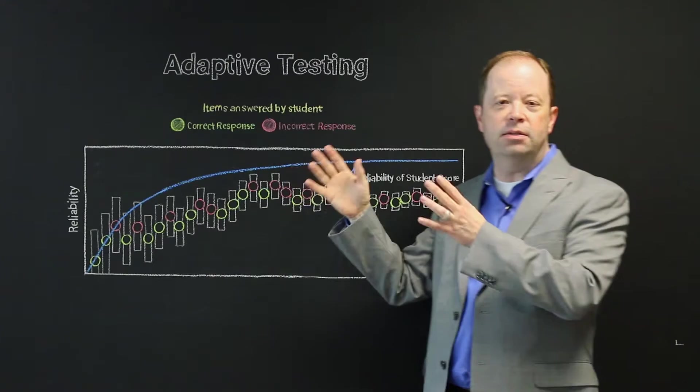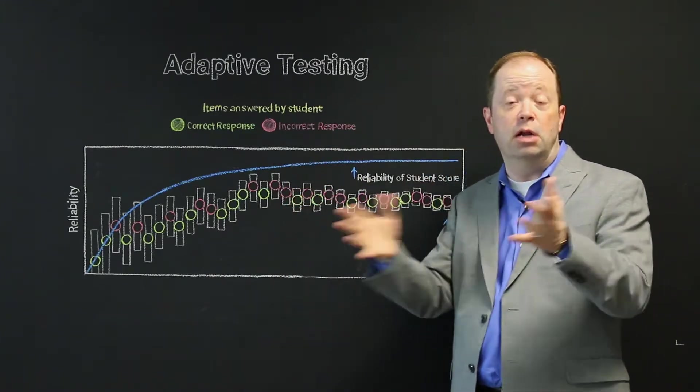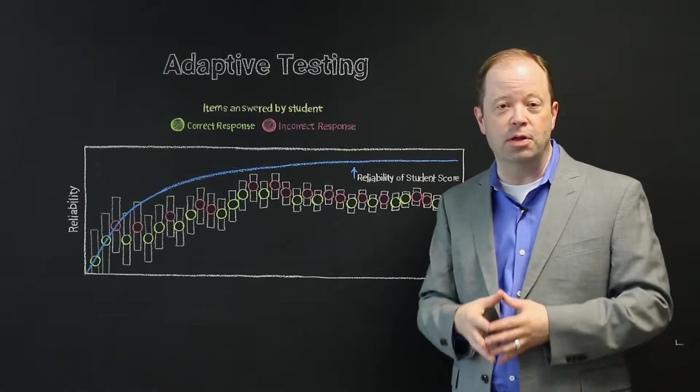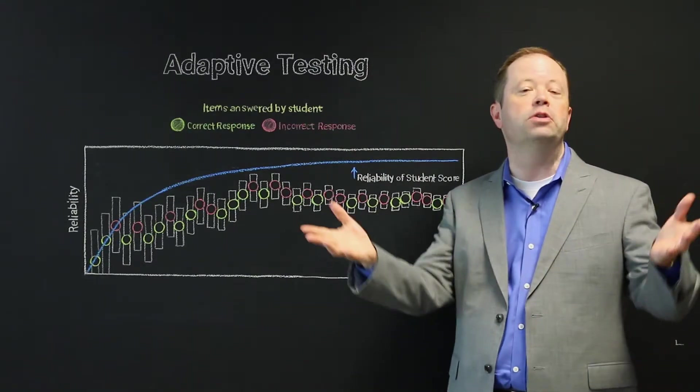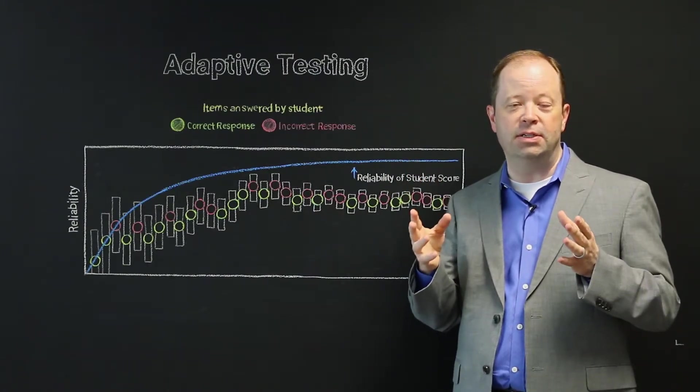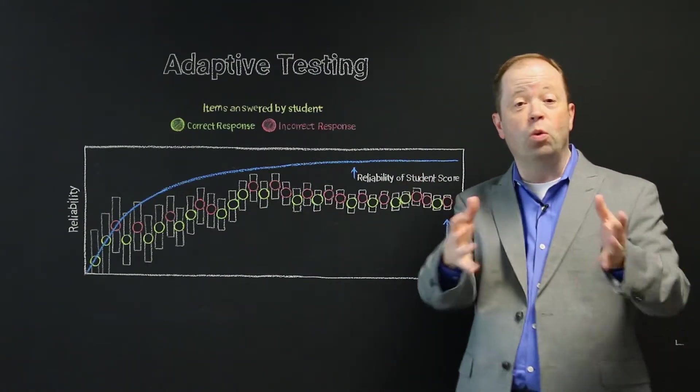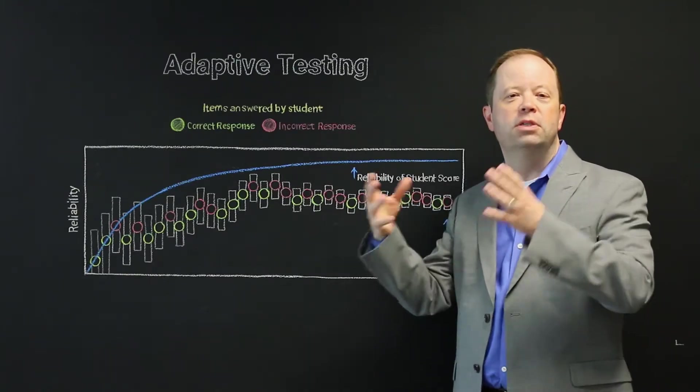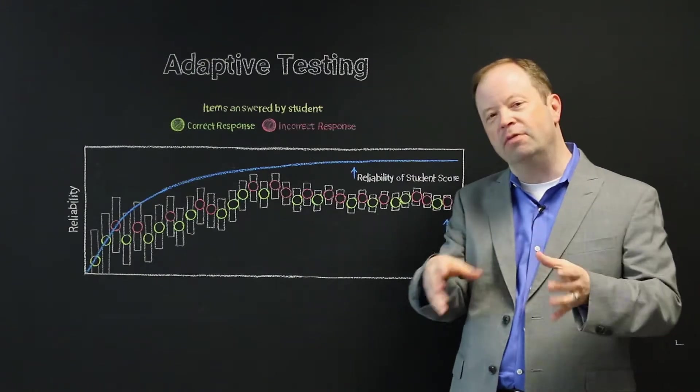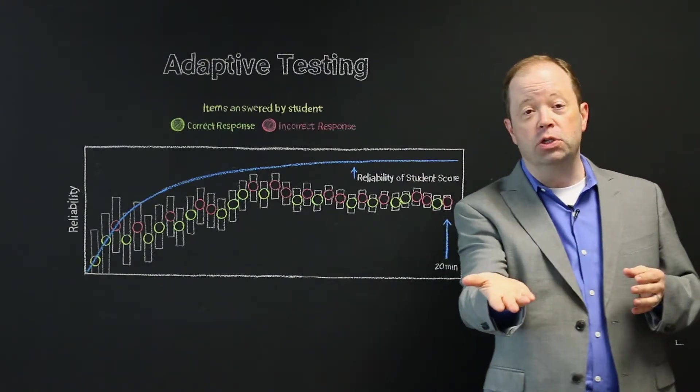In other words, you don't ask a bunch of questions to a kid that they don't know the answer to, and you don't ask a bunch of questions to them that they easily know the answer to. As one researcher put it, the dynamics around a computer adaptive test is that it mimics what a wise examiner would do. What would someone do if we could pay someone to sit down and administer individual items to a kid?